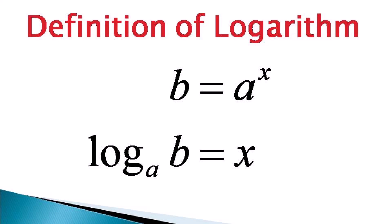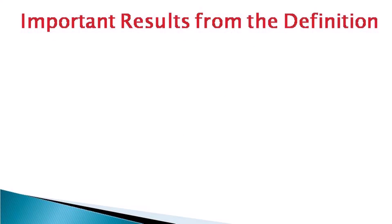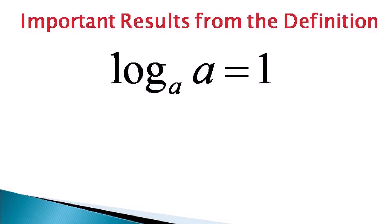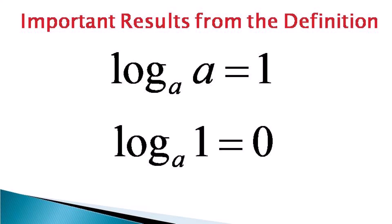Let us see some important results from the definition itself. The first result is that log of a to the base a is equal to 1 — that is, the log of any number on the same base is always equal to unity. Also, log of 1 to the base a is equal to 0, meaning the log of unity with any base is equal to 0.